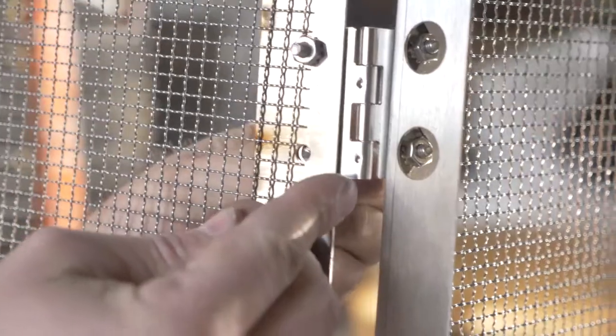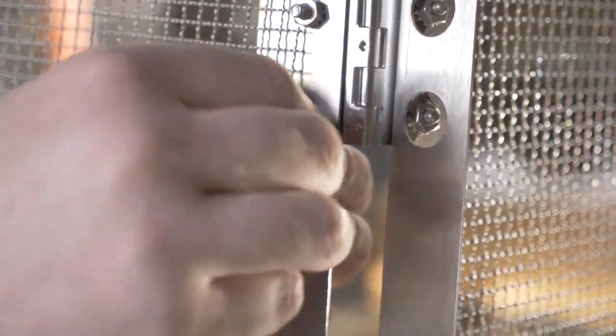Next, install your remaining two holes using 1032 by 1.5 inch bolts along with K-nuts.